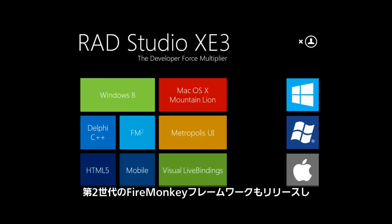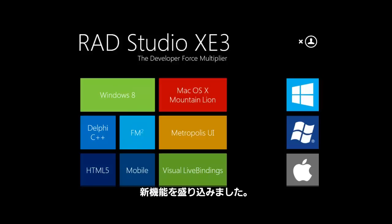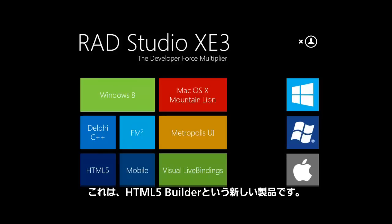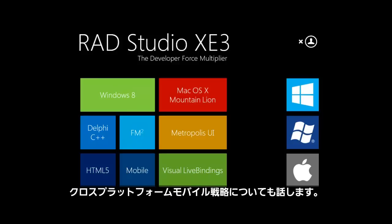We are releasing the second generation of the FireMonkey business application platform with new capabilities — we call it FM2. We also have support for HTML5 in a new product called HTML5 Builder, and towards the end I'll talk about our mobile strategies across multiple platforms.